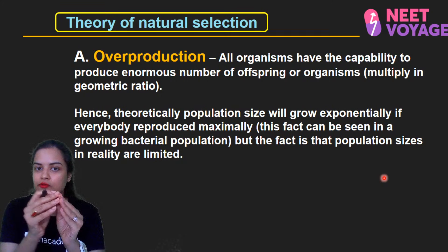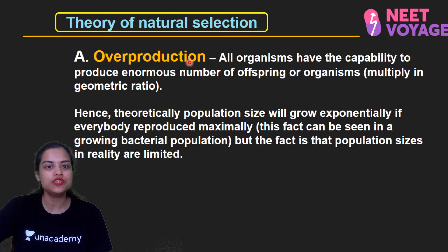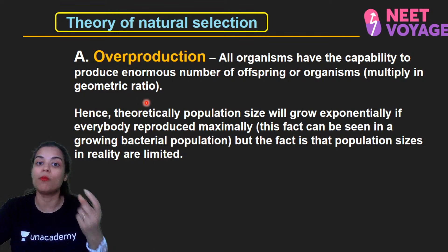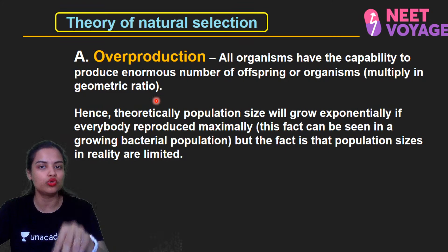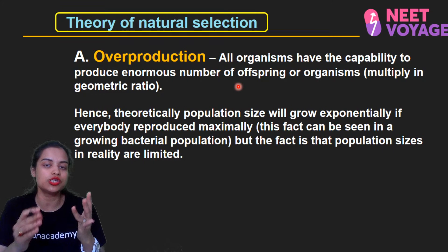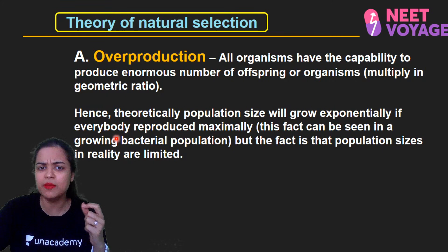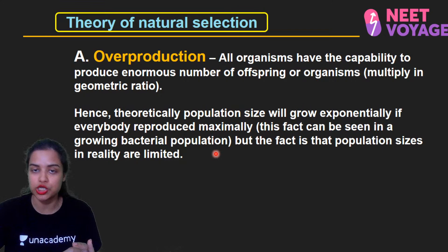Let's read the theory once more. All organisms have the capability to produce enormous numbers of offspring — they multiply in a geometric ratio (2, 4, 8, 16). This is overproduction. Reproduction ensures the continuity of a species. Hence, theoretically, population size will grow exponentially if everybody reproduces maximally. This can be seen in a growing bacterial population — geometric ratio doubling. Eventually, overproduction becomes so great that the bacterial colony grows large but the nutritive media is limited, so the better-adapted bacteria survive.